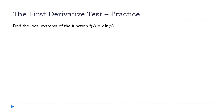Let's look at some more examples. Let's start with x to the ln of x. Anytime you have a logarithm, you always have to be a little concerned about the domain of the function. The domain of this thing is everything greater than zero, but not including zero, because we can't take the logarithm of a negative number or of zero.